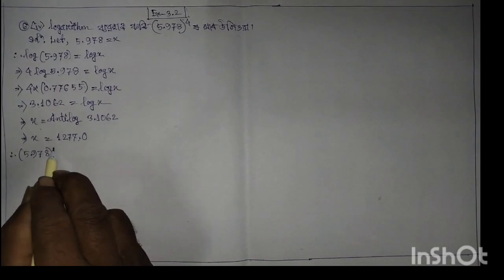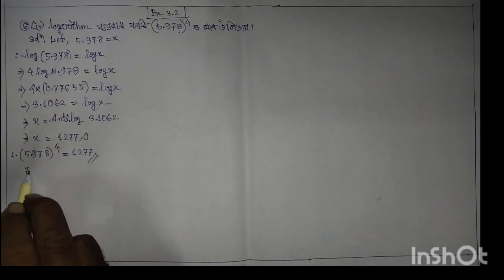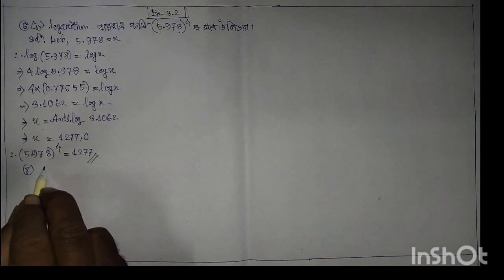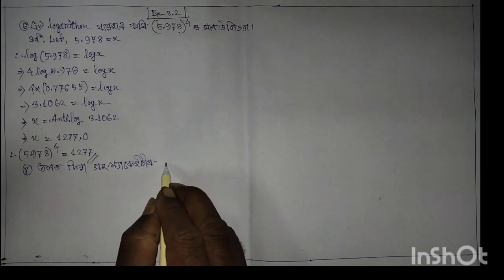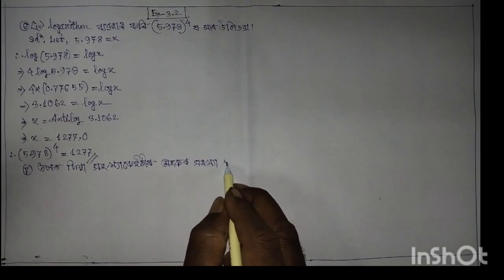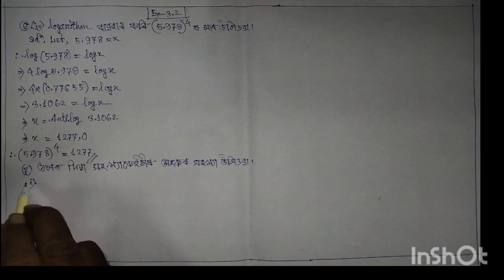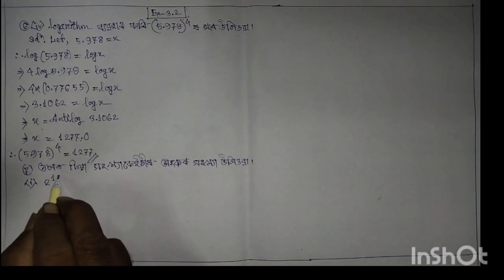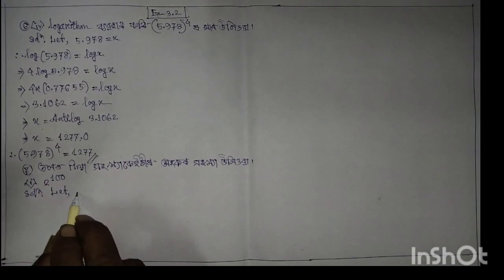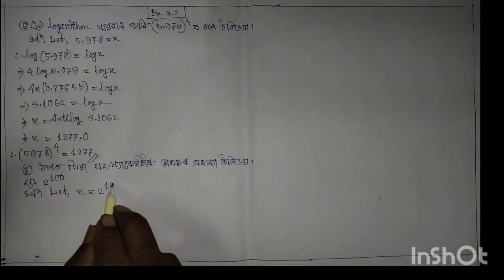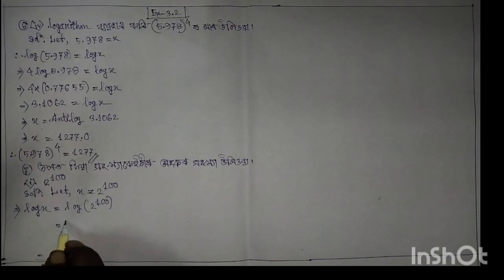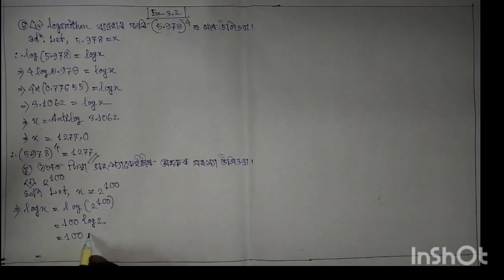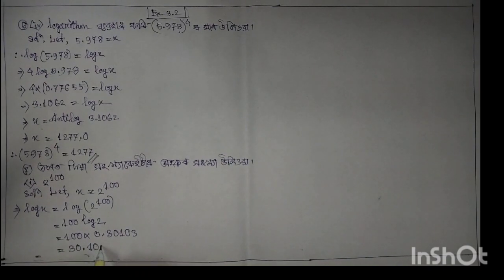5.978 to the power 4 is equal to 1277. Next: 2 power 100, solution. To find 2 power 100, take log: log of 2 power 100 equals 100 into log 2, which equals 100 into 0.3, giving 30.1, that is 31.